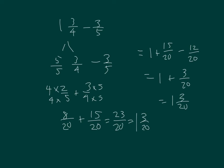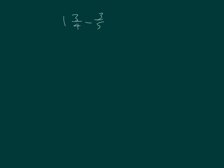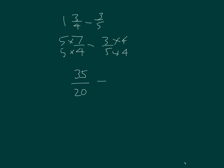I'll show you one more way I can solve this. My third way is to rewrite one and three-fourths as seven-fourths as an improper fraction, minus three-fifths. Now we get a common denominator — multiply by five, and multiply by four. Five times seven is thirty-five. Five times four is twenty. Minus twelve-twentieths, which equals twenty-three-twentieths, which as before is one and three-twentieths.